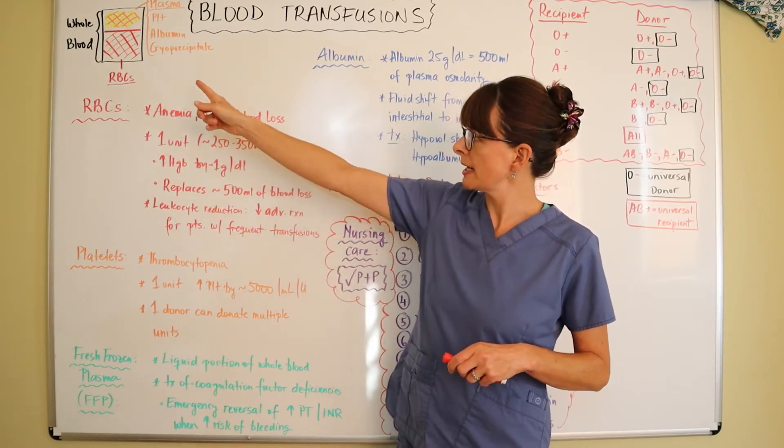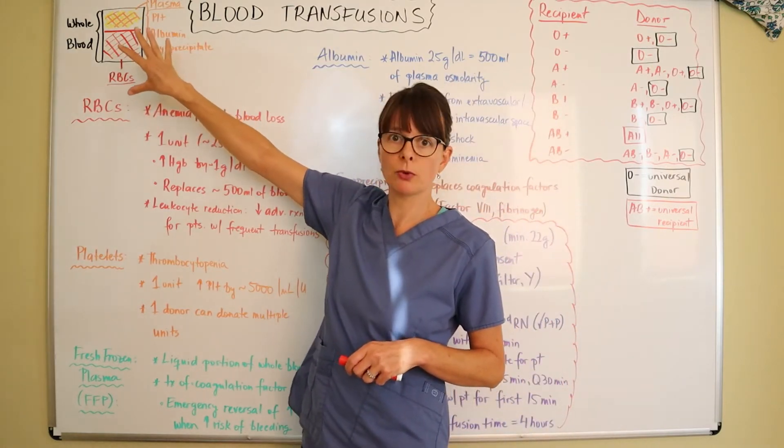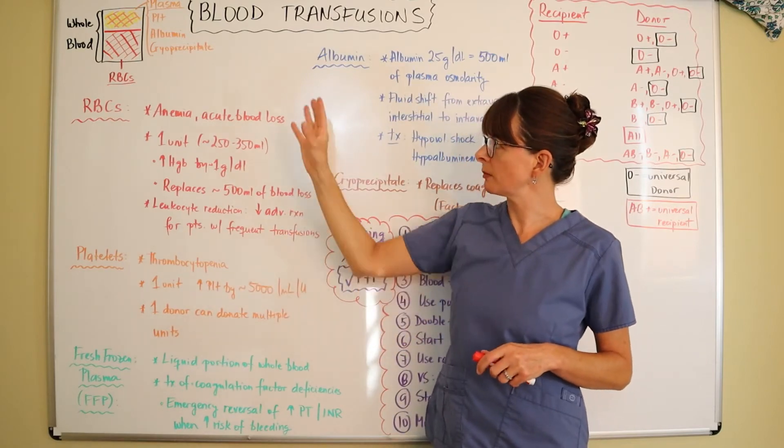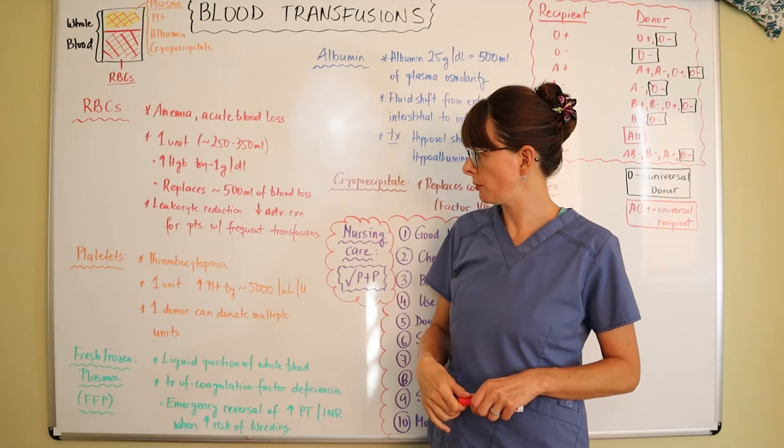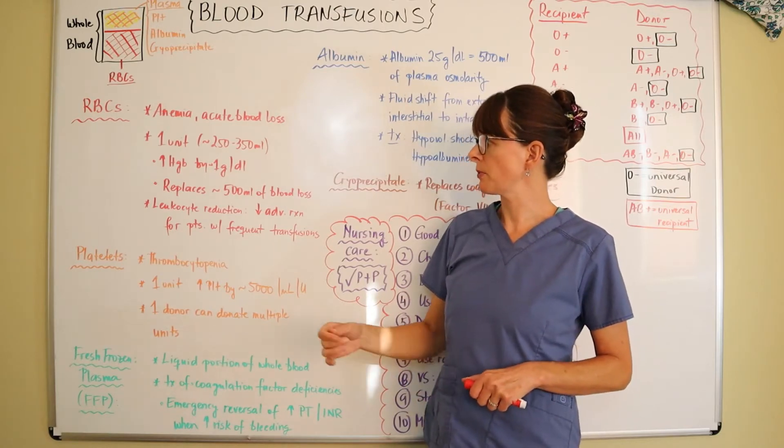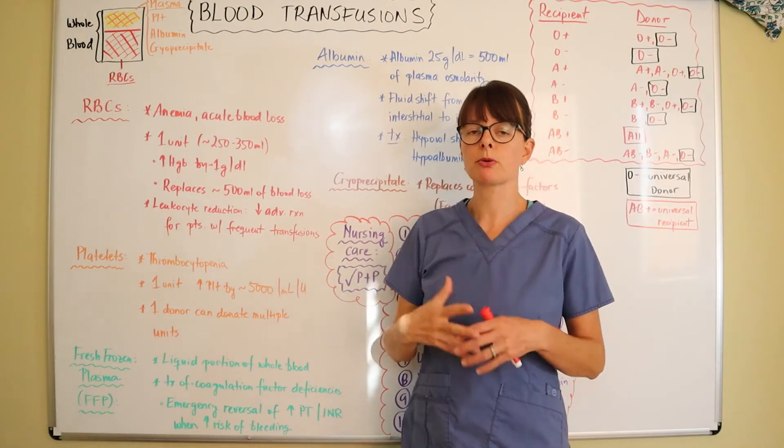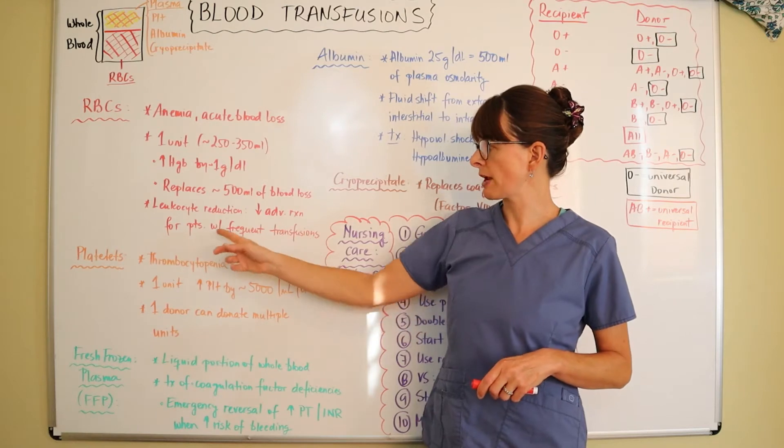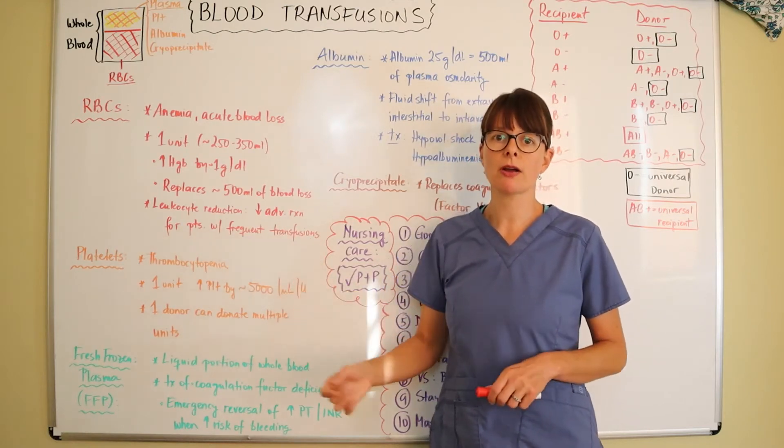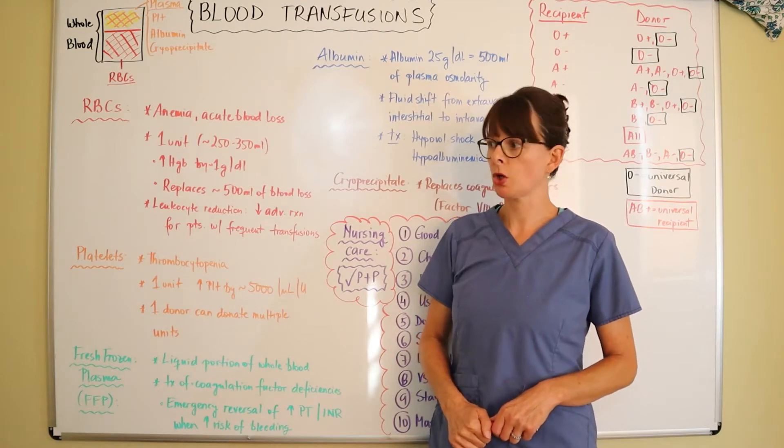That is because it's not only the red cells that we're losing if we have an acute blood loss, but also the plasma which will regenerate itself from the bone marrow. For packed red cells there is also a product called leukocyte reduction, a process that the blood can go through which decreases the adverse reaction for patients who require frequent transfusions.